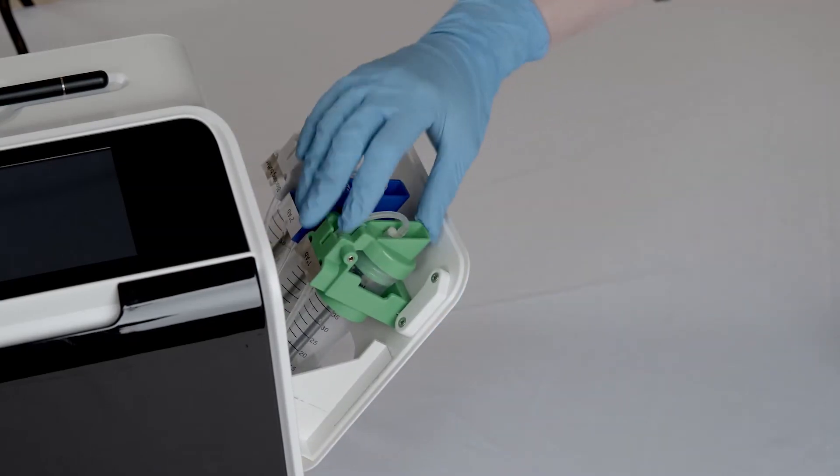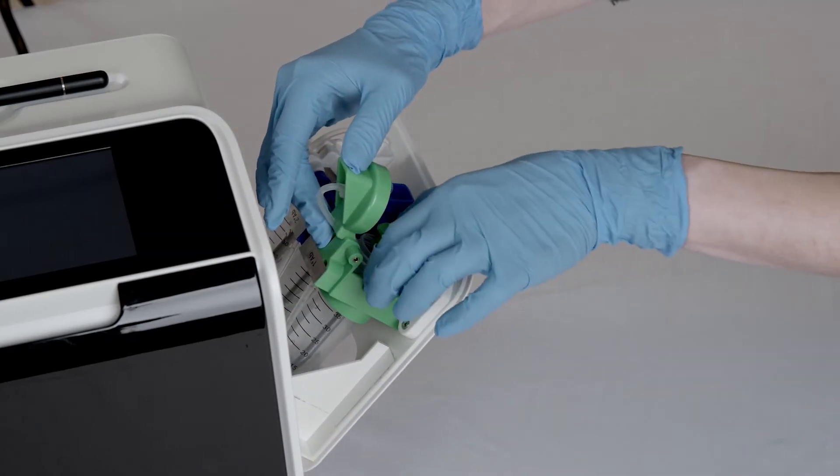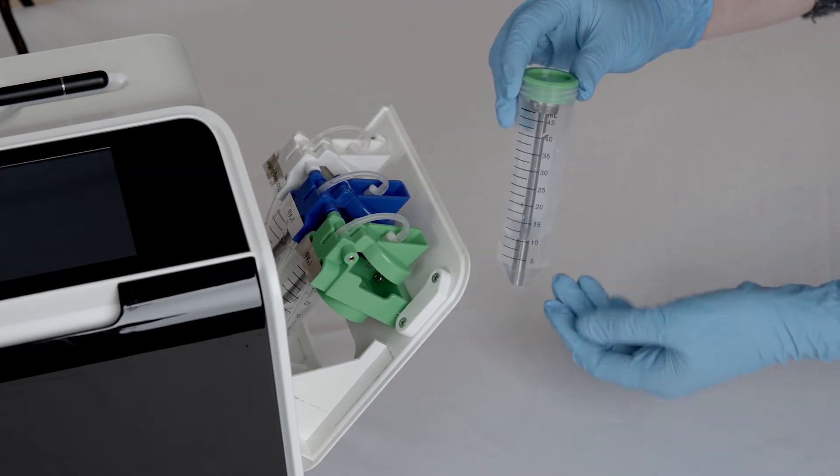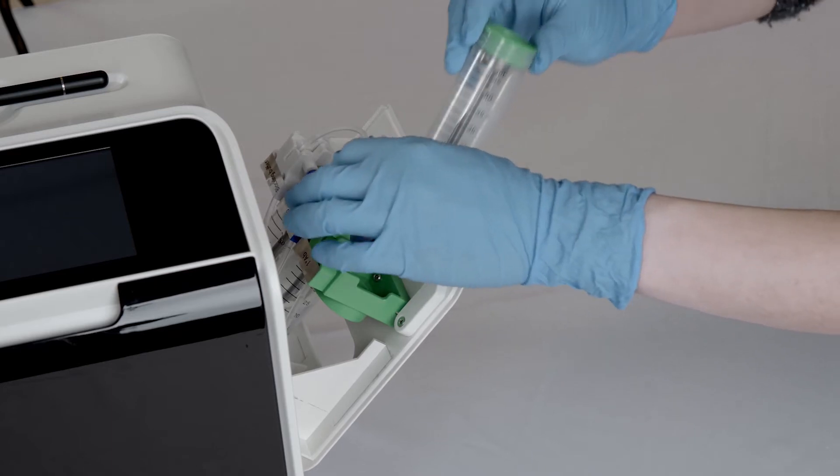On the side of the instrument, pull out the cartridge and load the blocking buffer, primary antibody, and secondary antibody reagents. The minimum volume requirement for each reagent is 10 ml.